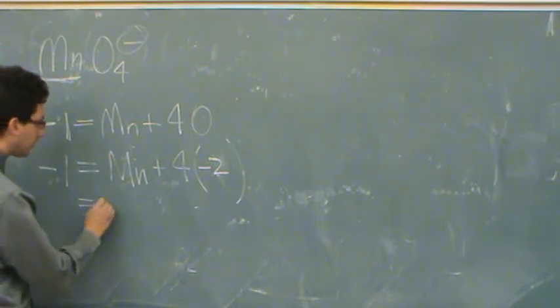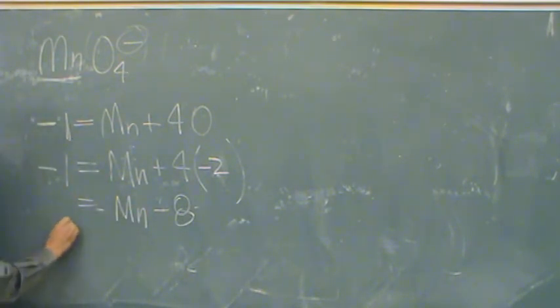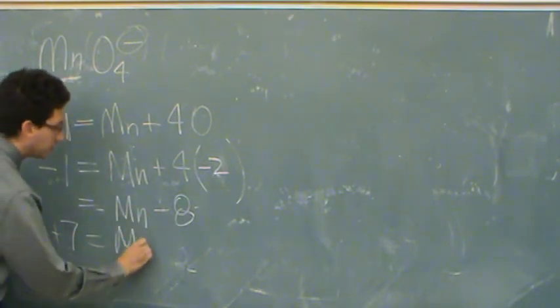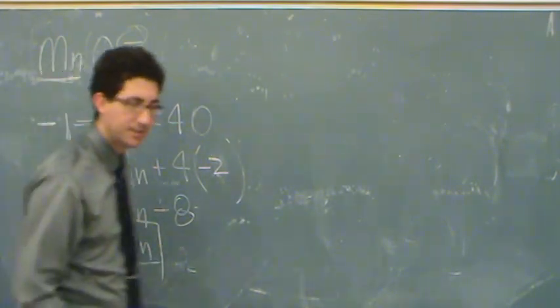Okay, so now you'd have minus 1 equals manganese minus 8. Move the minus 8 over, and that's where you get plus 7 for manganese. Which is a pretty common charge for Mn. Thank you.